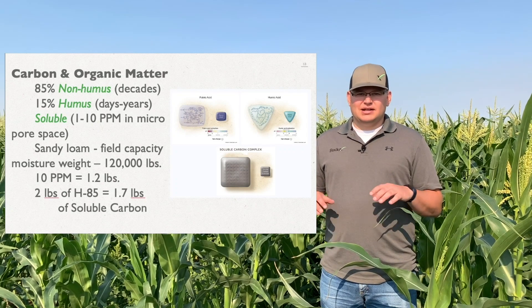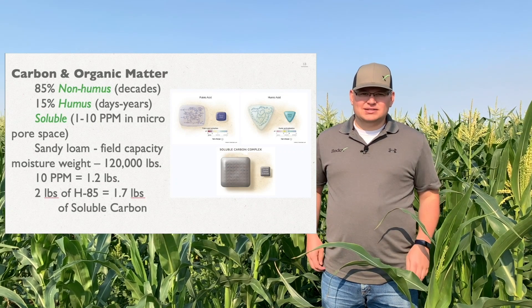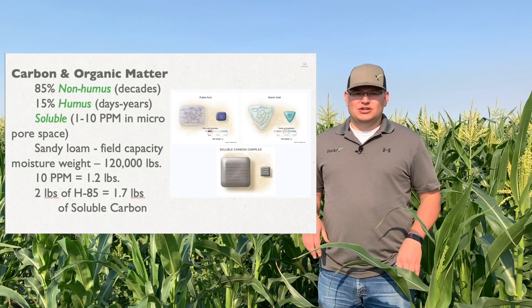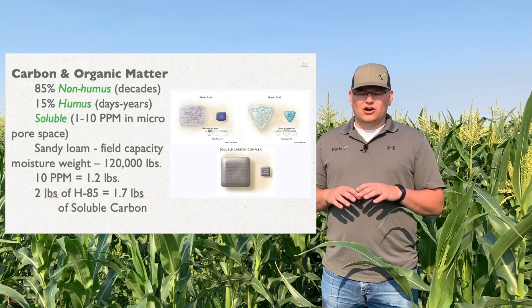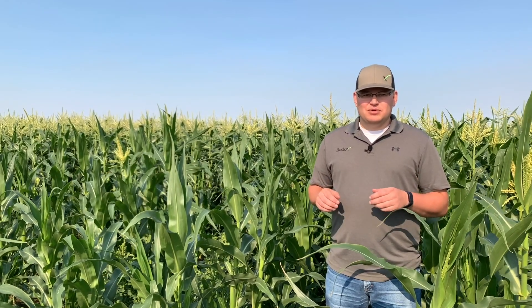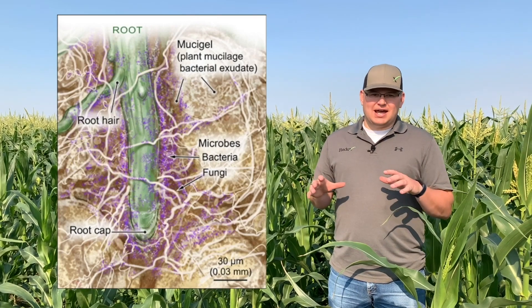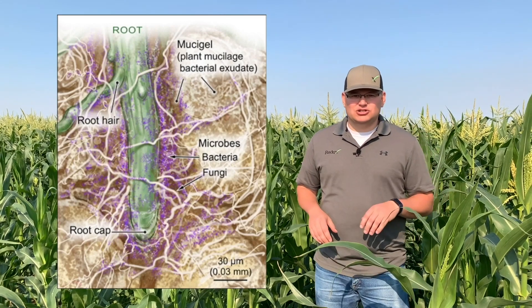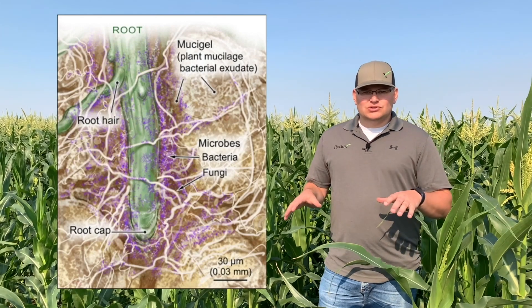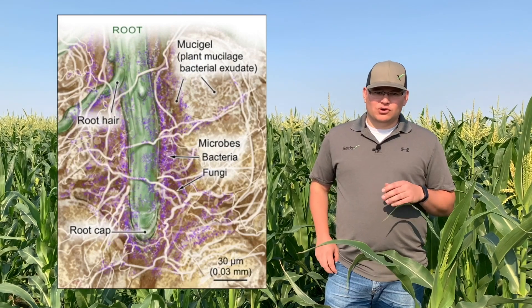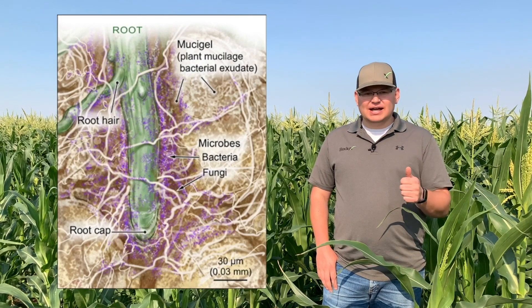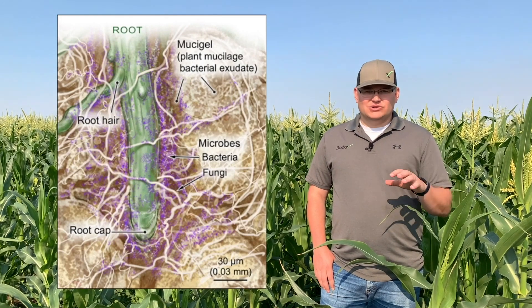Typically only one to 10 parts per million is actually soluble carbon dissolved in the soil solution. That soluble carbon is what all the microbes feed on in the soil. It can come from breaking down organic matter, and root exudates are also a main contributor. The rhizosphere — the zone right around the roots — is rich with life. The plant has a symbiotic relationship with everything in that rhizosphere, exuding carbohydrates or sugars out into the soil to feed the fungi, bacteria, and microbes around the roots.